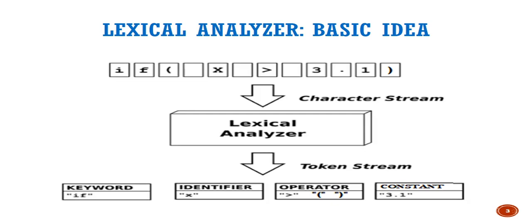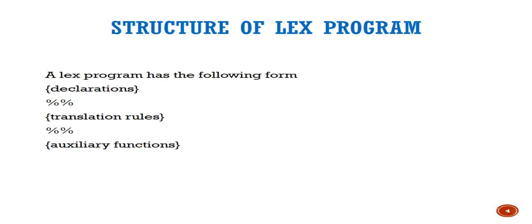Consider the sentence 'if x is greater than 3.1' — this is an instruction given in a program on which we have to do lexical analysis. The character stream is provided as input to the lexical analyzer, and it produces a stream of tokens: the keyword 'if', the identifier 'x', operator symbols greater-than, opening and closing parentheses, and the constant 3.1.